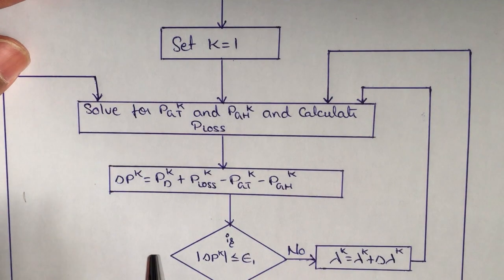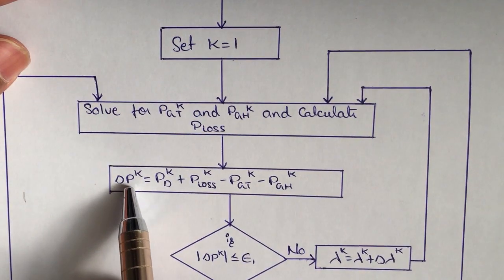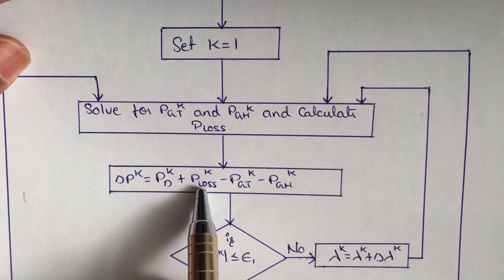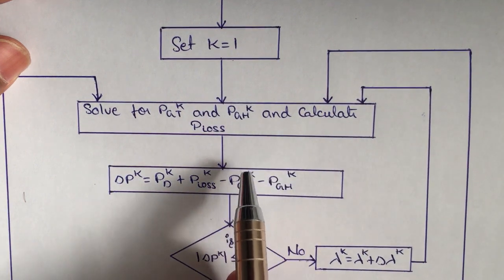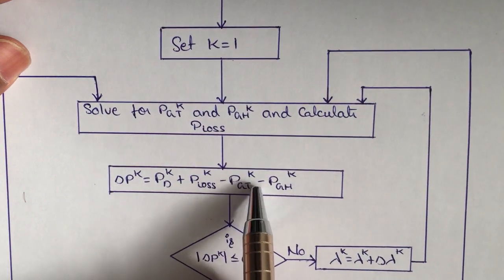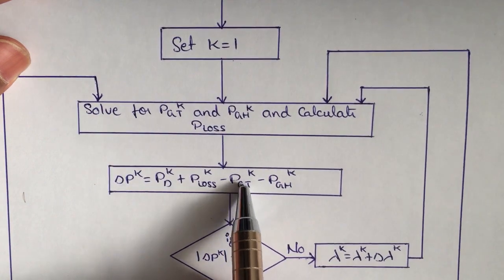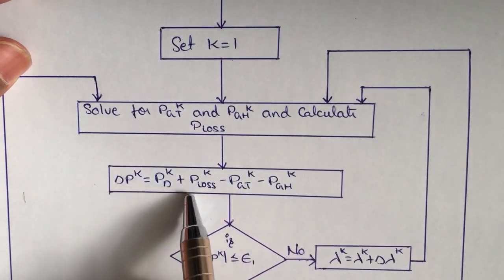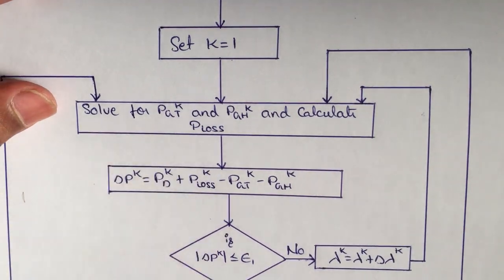After calculating those three parameters, we check the deviation in power. The deviation in power delta P_k is calculated as the total demand plus the losses minus the thermal power generation at the k-th interval minus the hydro power generation at the k-th interval.